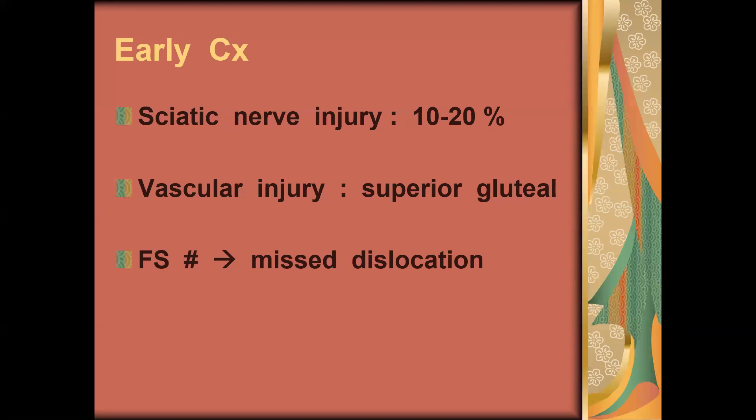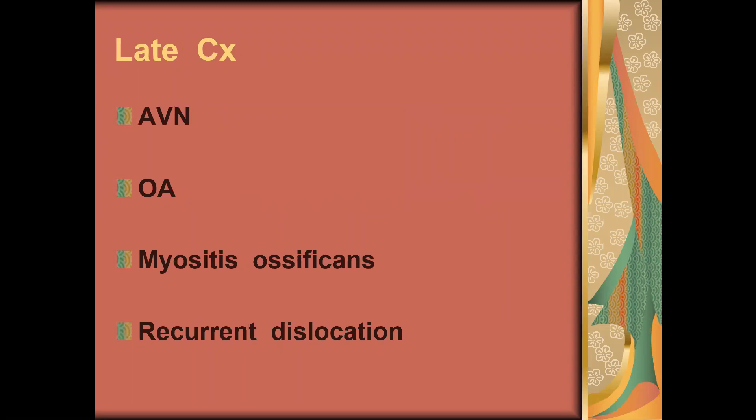Always remember: when you see femur shaft fracture, stick to the rules of x-rays we mentioned previously - two joints - to make sure there is no posterior hip dislocation with femur shaft fracture. Late complications include avascular necrosis, especially if we delay reduction. Also osteoarthrosis, myositis ossificans which is common in the hip, and after dislocation there can be recurrence of dislocation because the soft tissue is not sufficient.